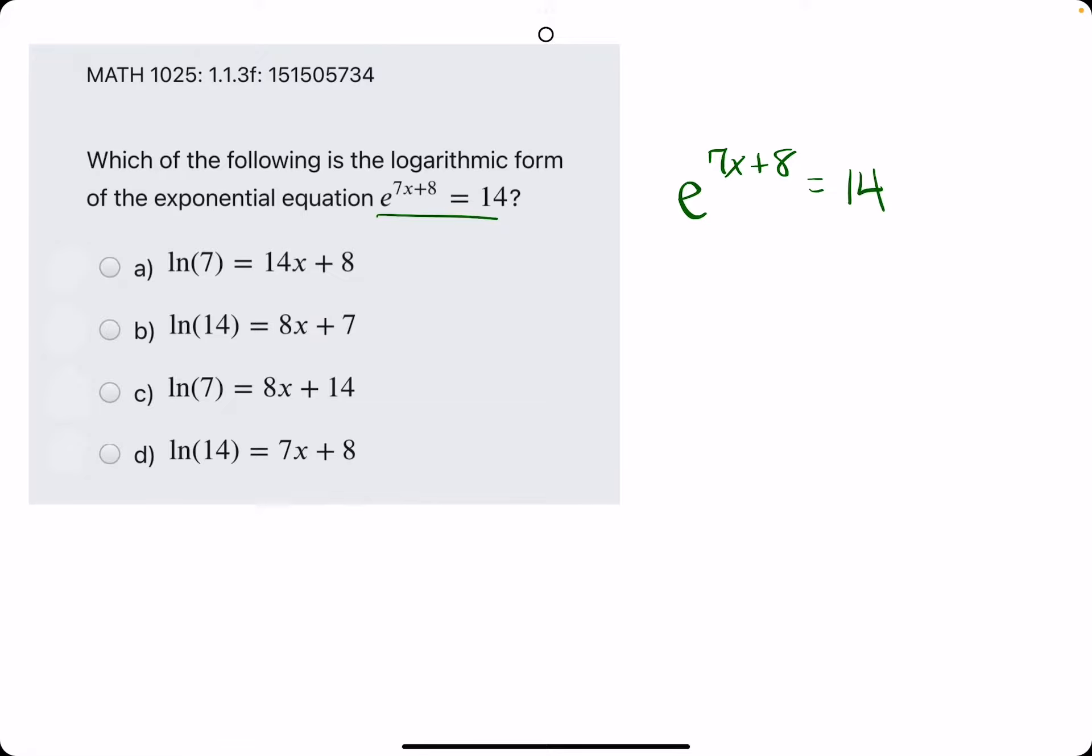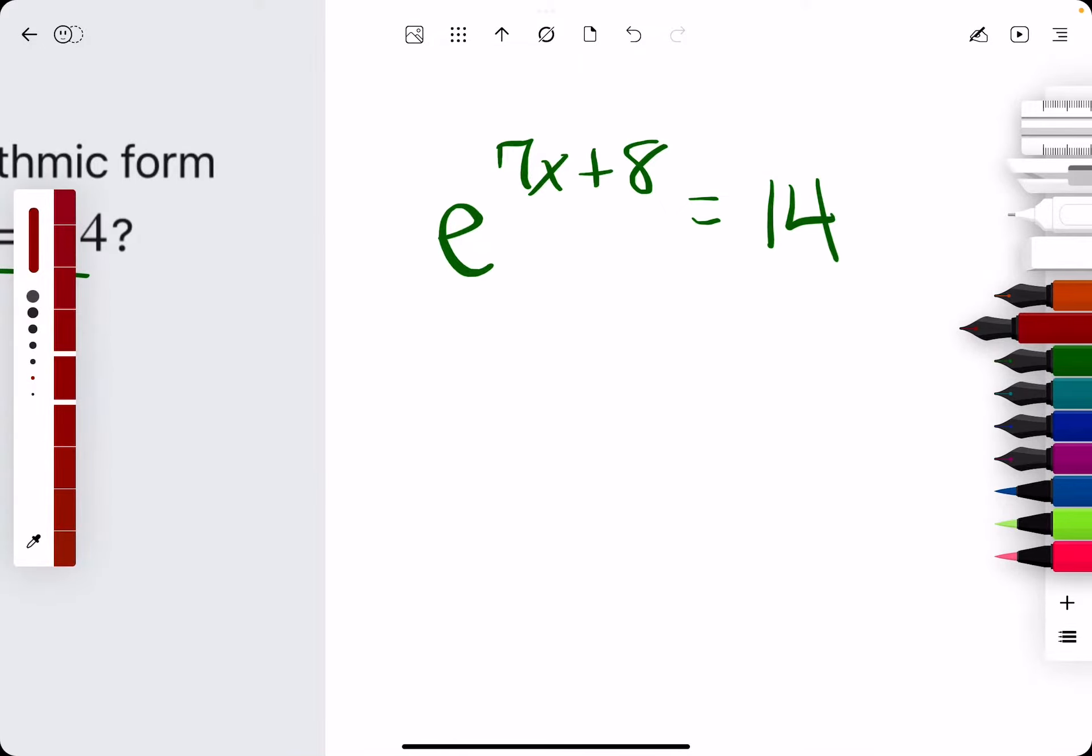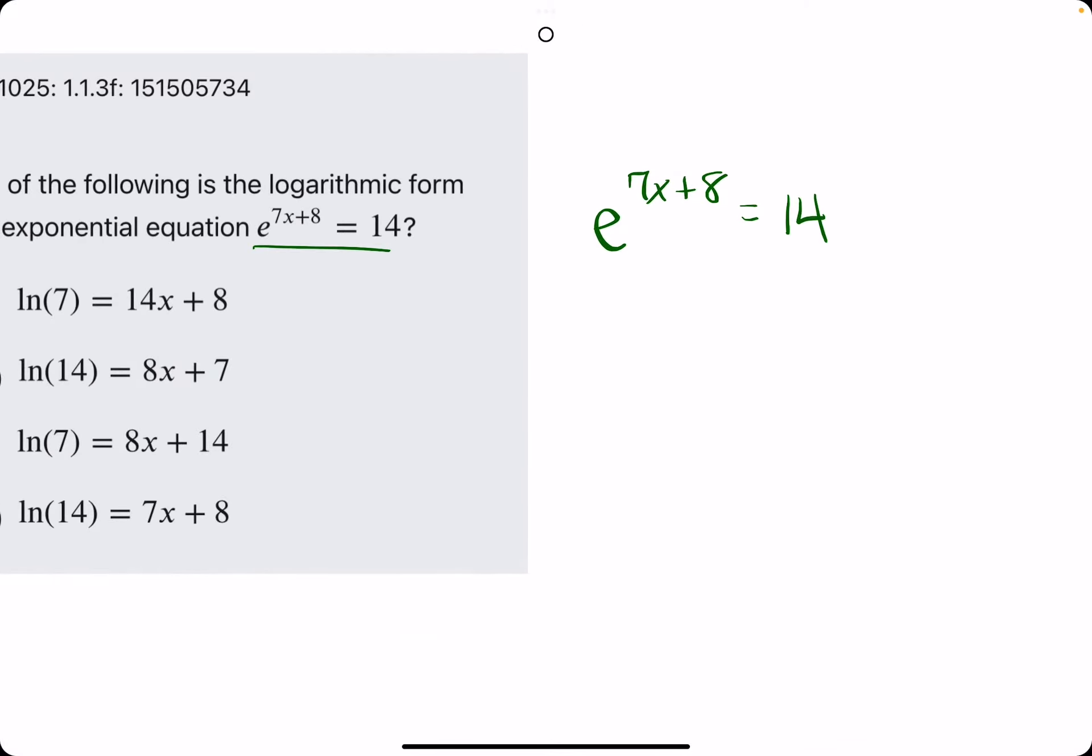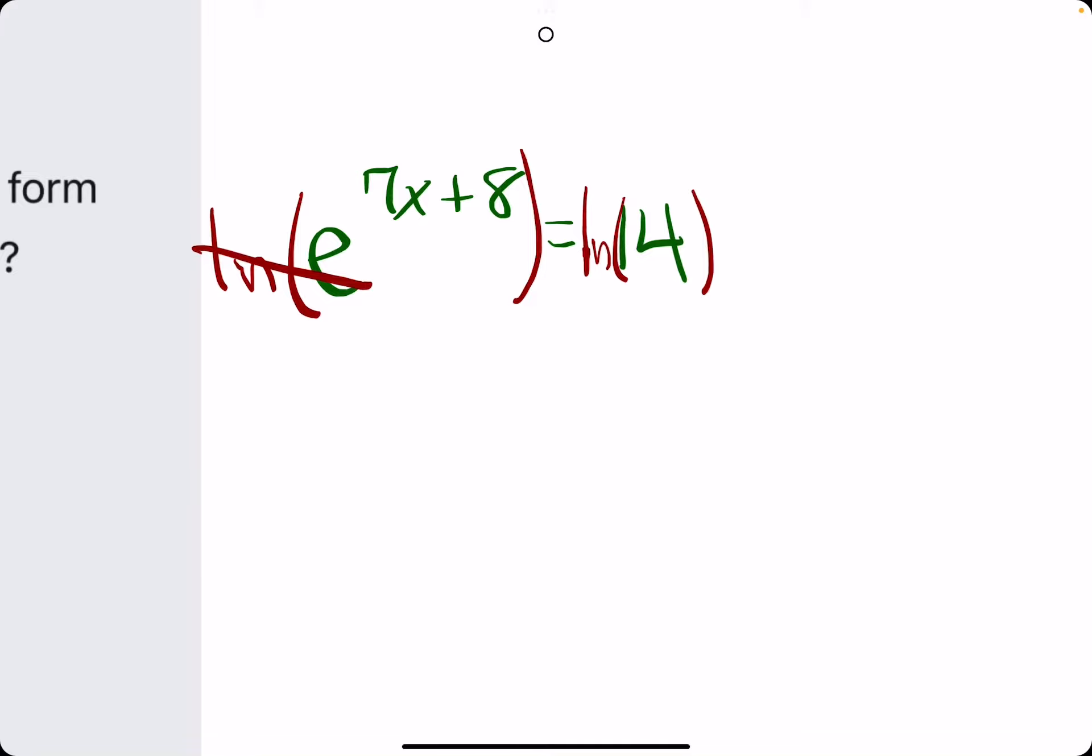And talk about what to do. So the goal here is basically just to eliminate the exponential term or the e. The way we do that is by taking the ln natural log of both sides. When we do that, ln and e cancel.